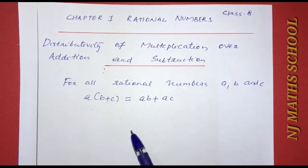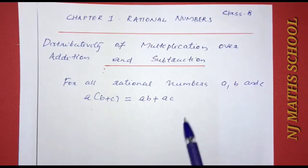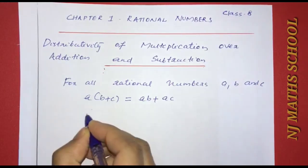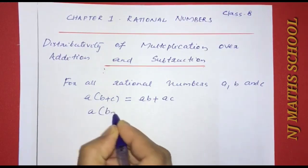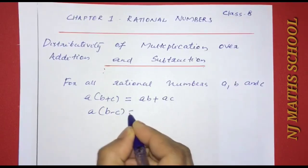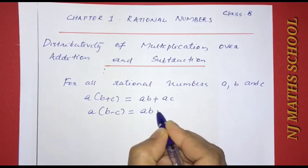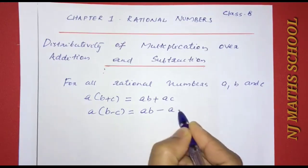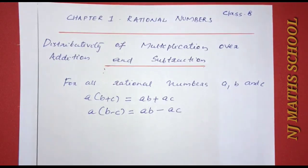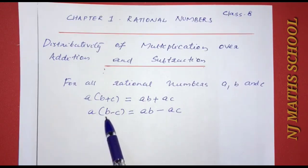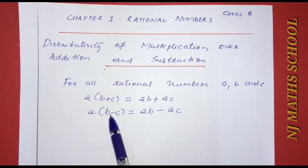A into (B plus C) is equal to AB plus AC. The same applies to the subtraction case: A into (B minus C) is equal to A into B minus A into C. We distribute A into B minus A into C.